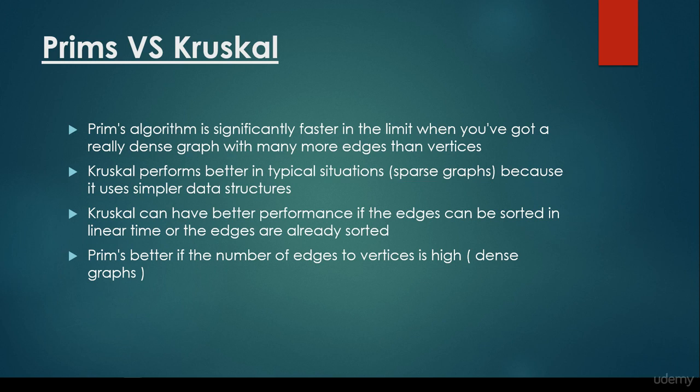Prim-Jarnik algorithm is better if the number of edges relative to vertices is high, so the graph is dense. As a good rule of thumb: if there's a dense graph where the number of edges are very high, use Prim-Jarnik algorithm. For standard graphs where the number of edges are not that high, Kruskal algorithm is going to be better, because it doesn't use any underlying abstract data types such as the heap, and therefore doesn't have any additional memory complexity.